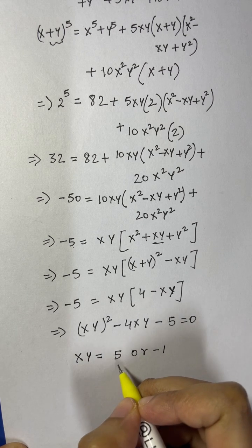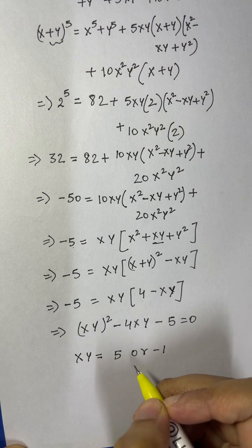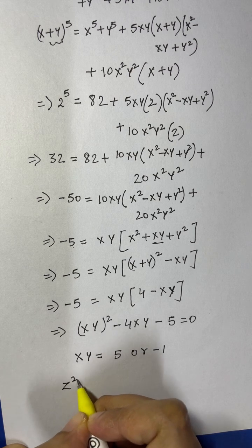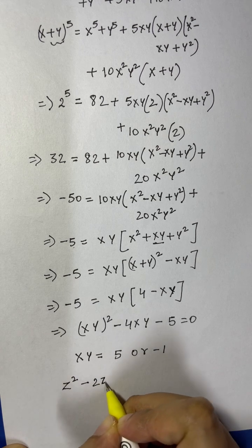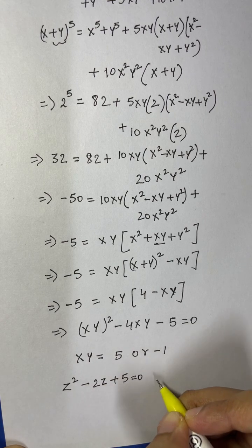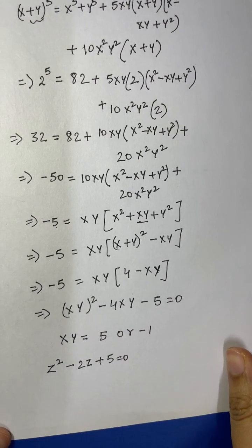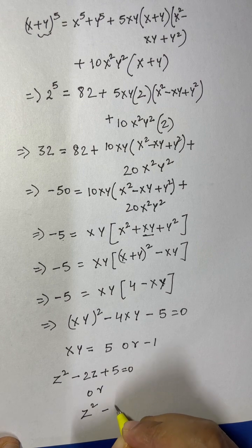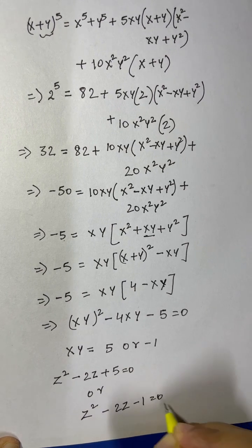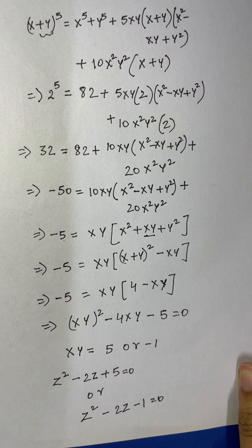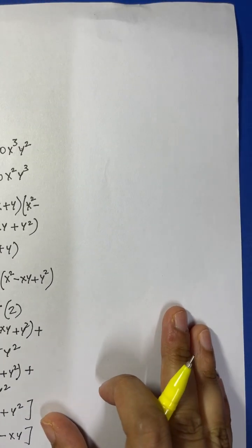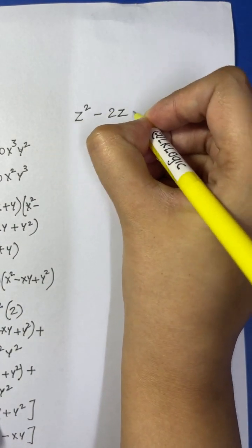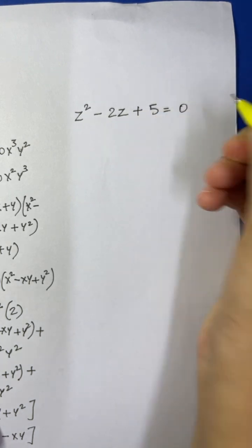Combined with x plus y equals 2, we get the roots as either z squared minus 2z plus 5 equals zero, or z squared minus 2z minus 1 equals zero. Let's solve each of these equations.